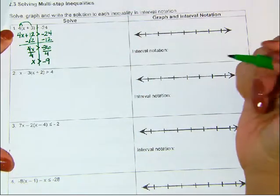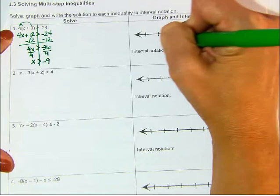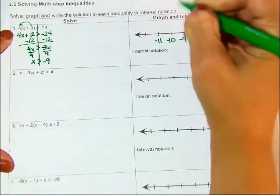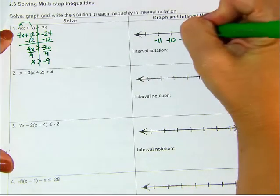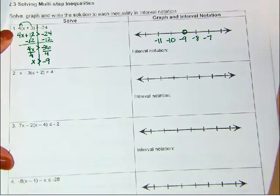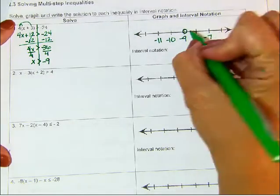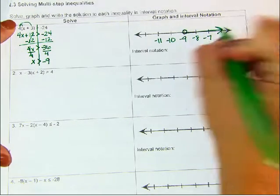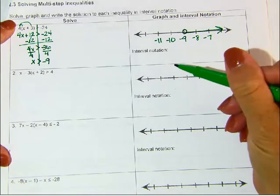So on my number line, I need to put a negative 9 somewhere, and then I can just put some other numbers. It does not have that equal to sign, so it is just an open circle because it does not include the negative 9. And x is greater than, so it's going to the right. So now, to write it in interval notation...